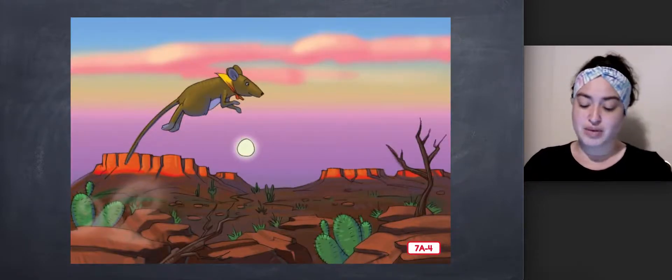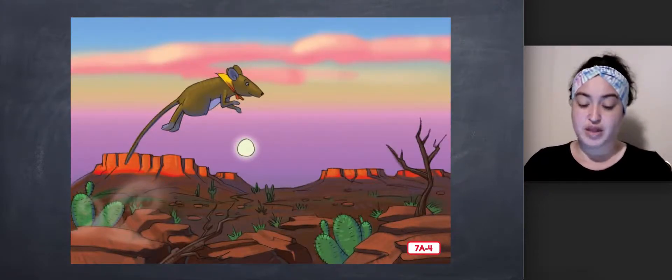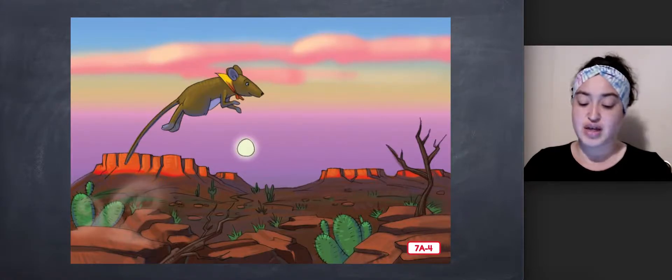Eventually, Jumping Mouse came to a stream. The stream gave life to this part of the dry desert. Beside the stream grew many bushes.